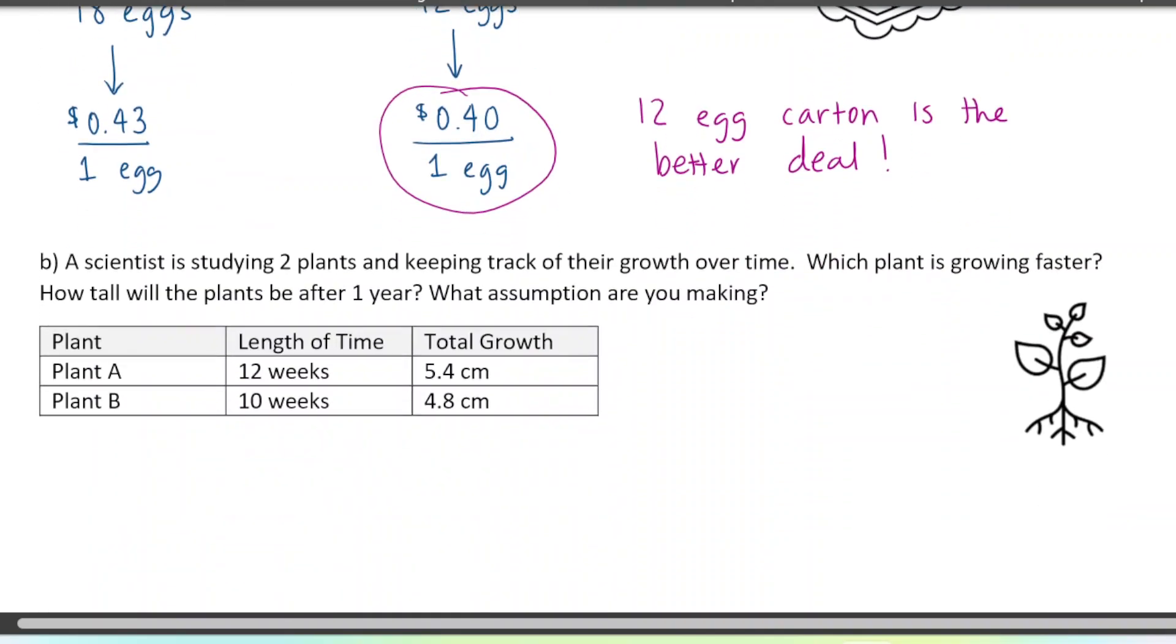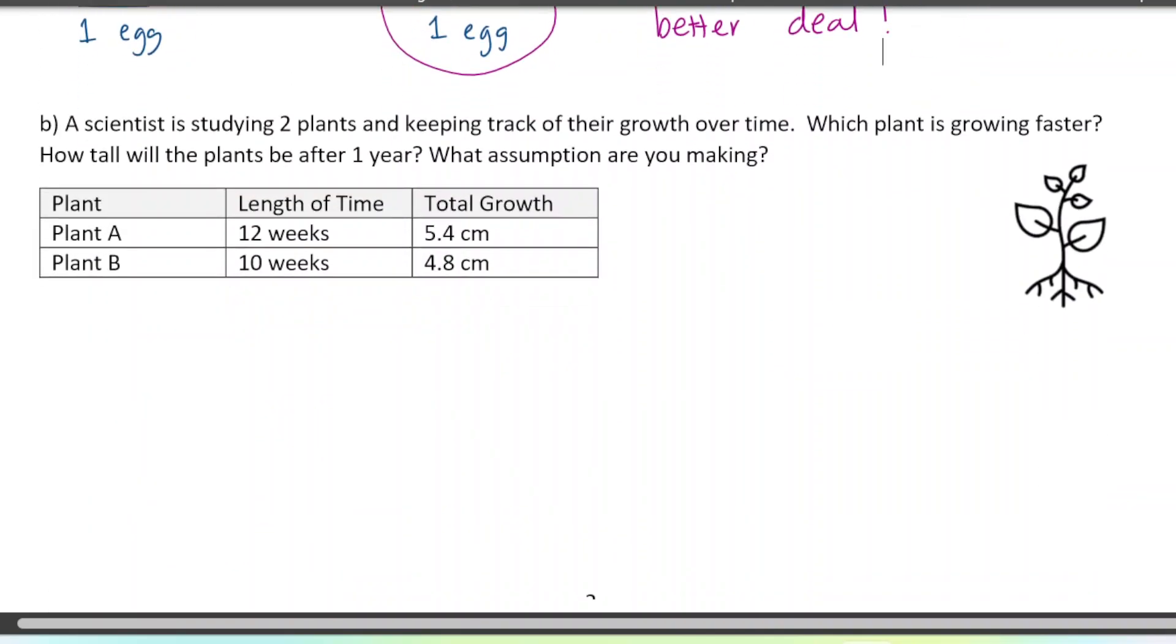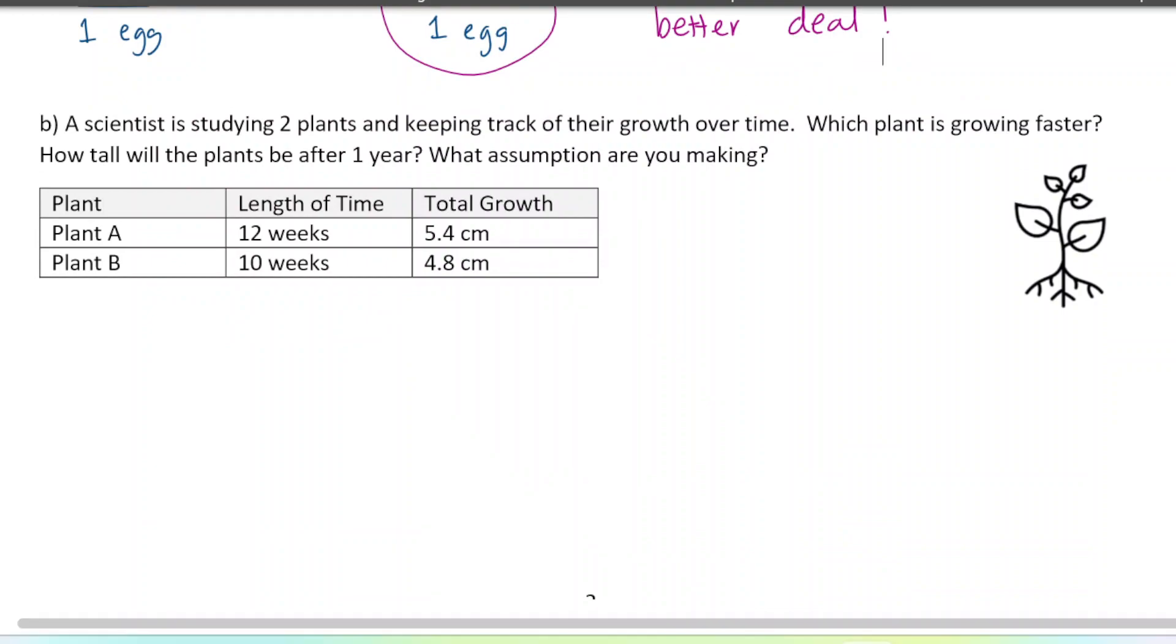Okay, let's do another unit rate problem. It says a scientist is studying two plants and keeping track of their growth over time. Which plant is growing faster and how tall will the plants be after one year? What assumption are you making? Okay, so let's look at plant A and plant B. If you want you could pause the video here and try this on your own.